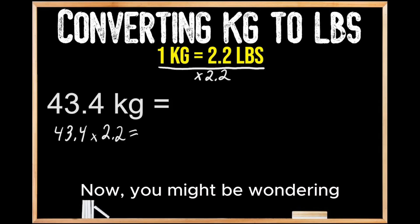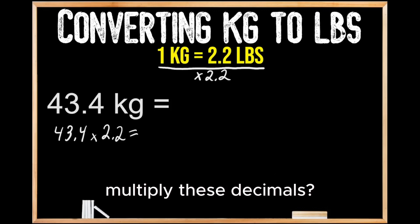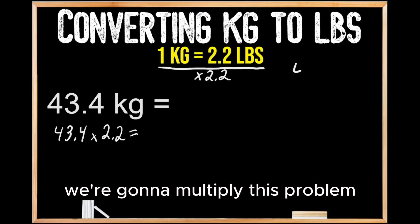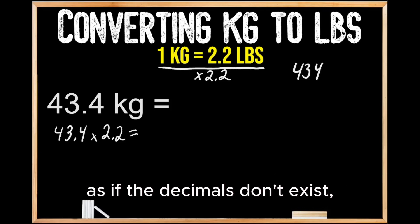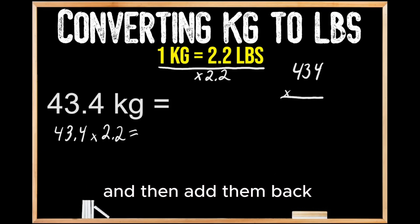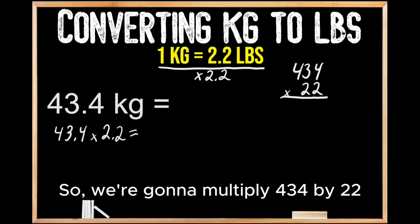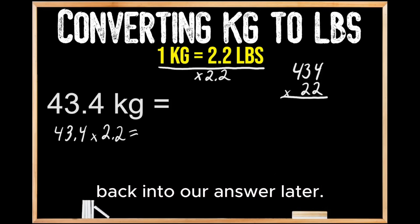You might be wondering, how exactly am I going to multiply these decimals? Whenever we're multiplying decimals, we're going to multiply this problem as if the decimals don't exist and then add them back later into our answer. So we're going to multiply 434 by 22 and then add the decimals back into our answer later.